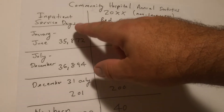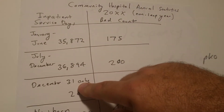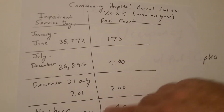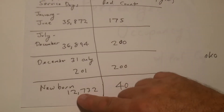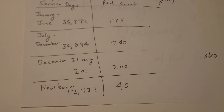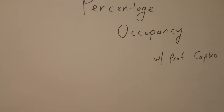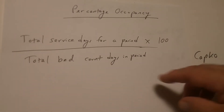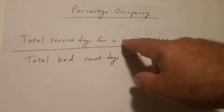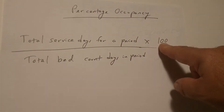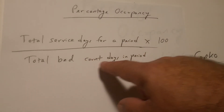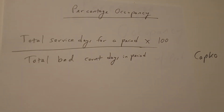So you've got a couple of periods here, and then you've got December 31st. Here's the bed counts, and then down at the bottom we're going to have a separate count for newborns for the entire year. Here is the formula that we're going to utilize: percentage occupancy is the total service days for a period times 100, all divided by the total bed count days in the period.